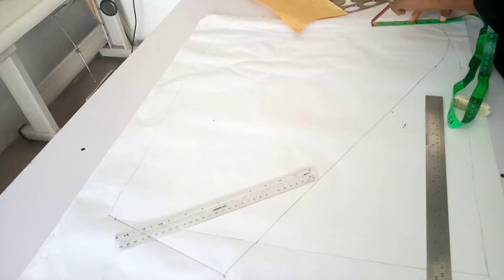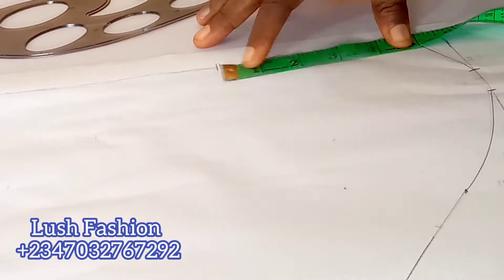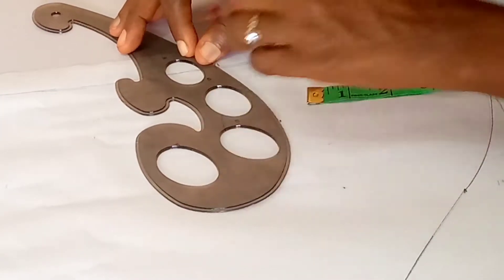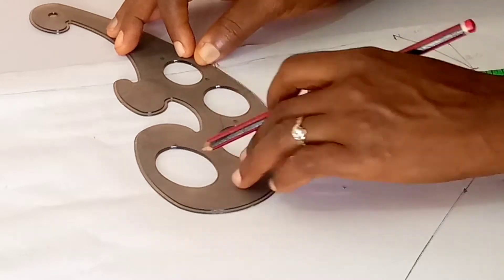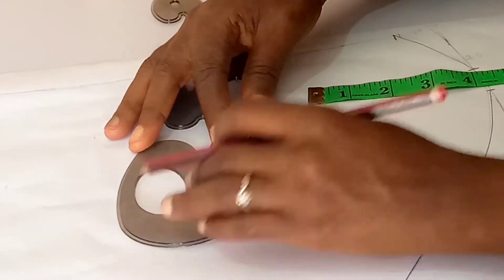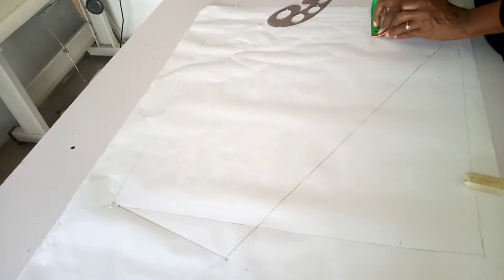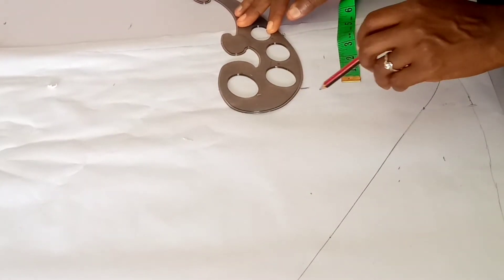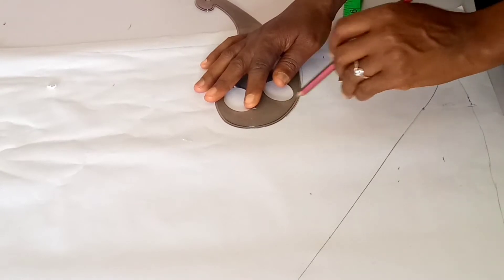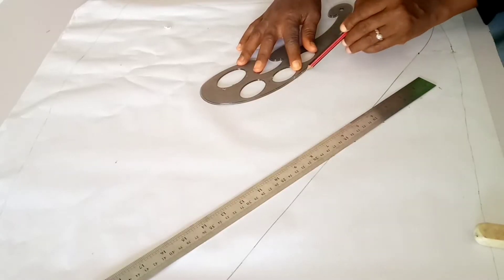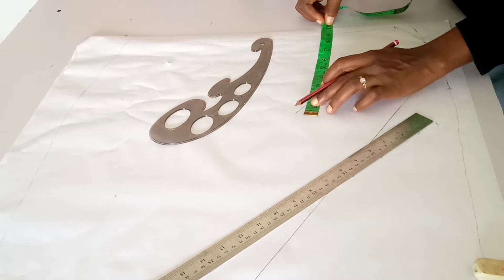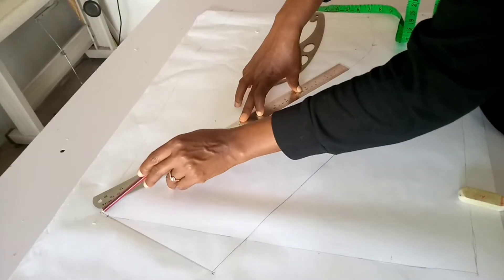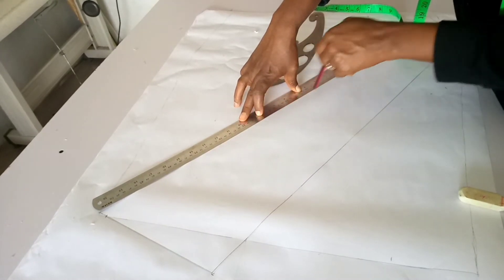Now you are going to measure 5 inch. Move your table and measure 5 inch again. And connect with your curve ruler. That's a side that is not so curvy. Measure 5 inch from the waist mark and curve. Curve a bit downwards. Ensure it doesn't curve too deep inwards. Then connect to the base.